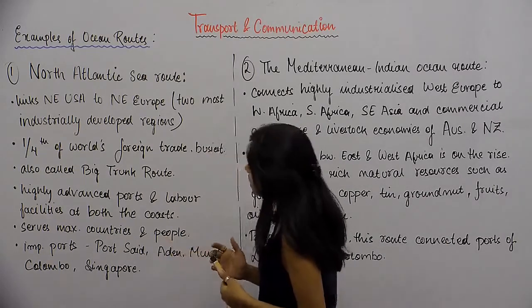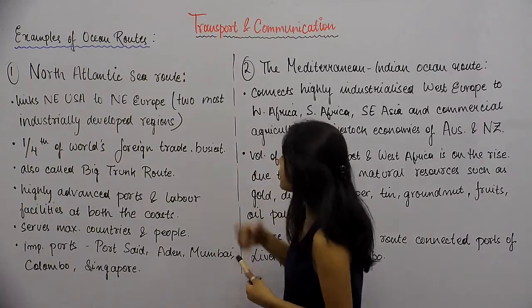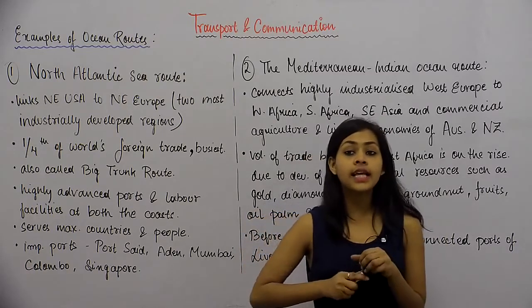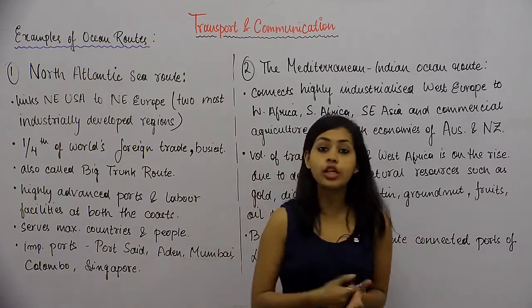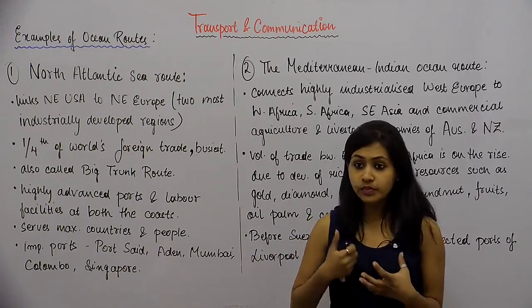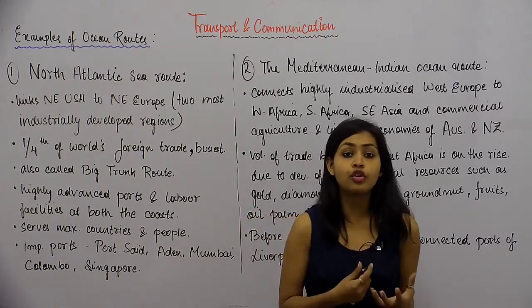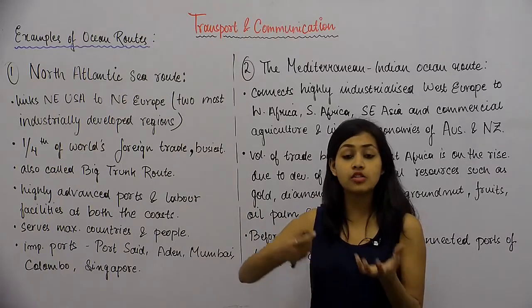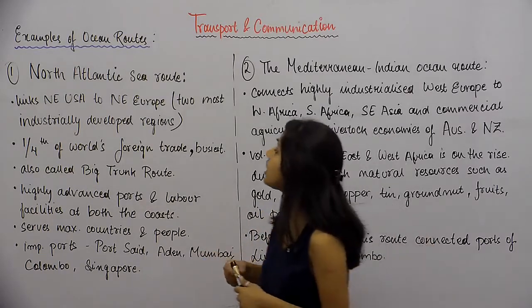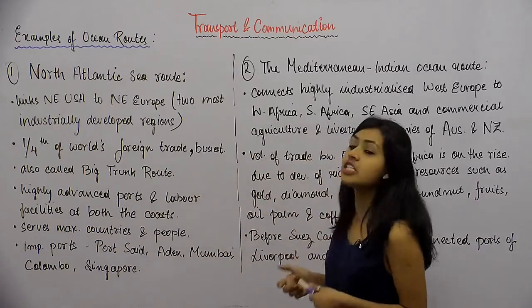That is what makes this trade route so busy. The North Atlantic Sea Route handles one-fourth of the world's foreign trade. One-fourth of the world's foreign trade happens between the United States of America and countries of North Western Europe, which makes this the busiest of all trade routes.